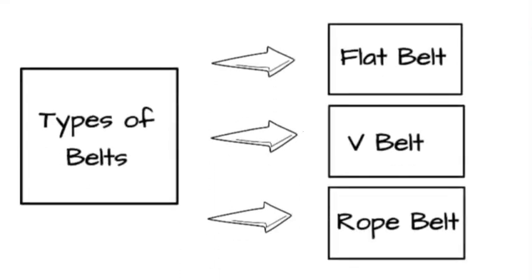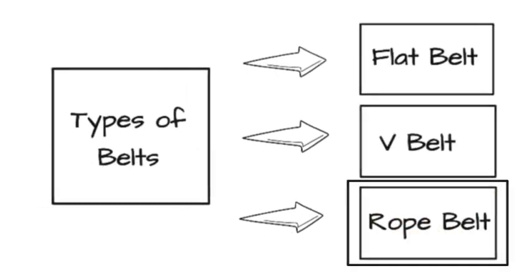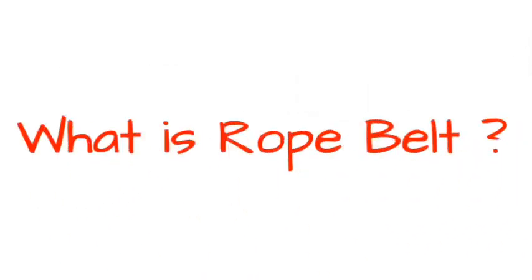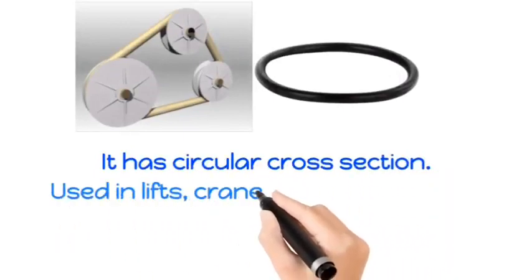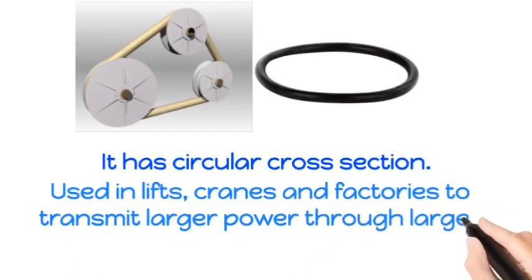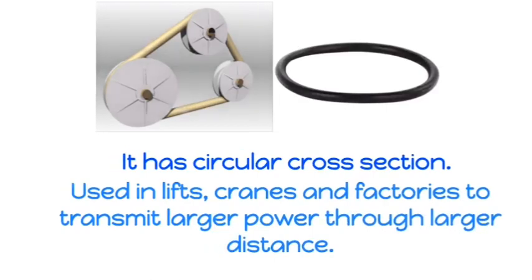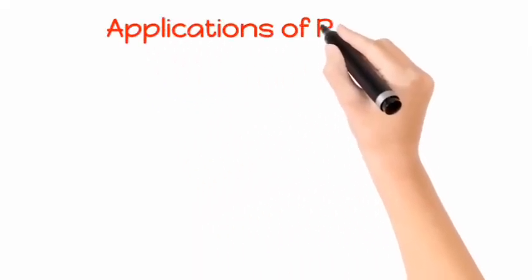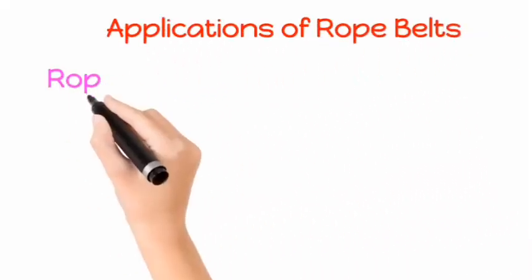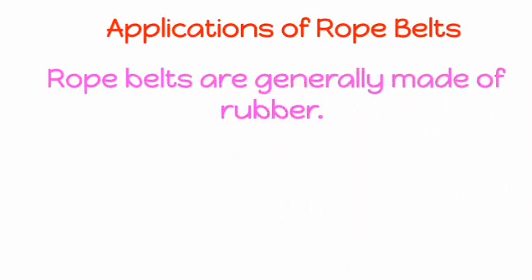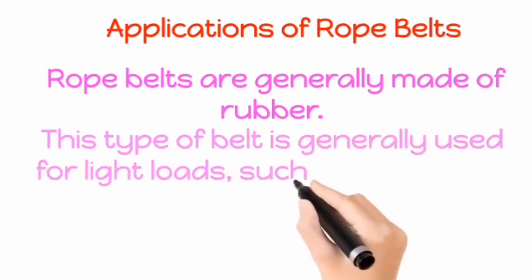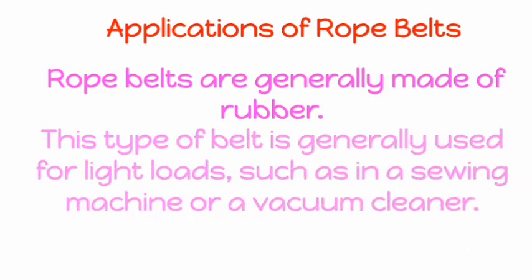Now, we will see Rope Belt. What is a Rope Belt? It has a circular cross section used in lifts, cranes and factories to transmit larger power through larger distances. Applications of Rope Belts: Rope belts are generally made of rubber. This type of belt is generally used for light loads such as in seaming machines or a vacuum cleaner.